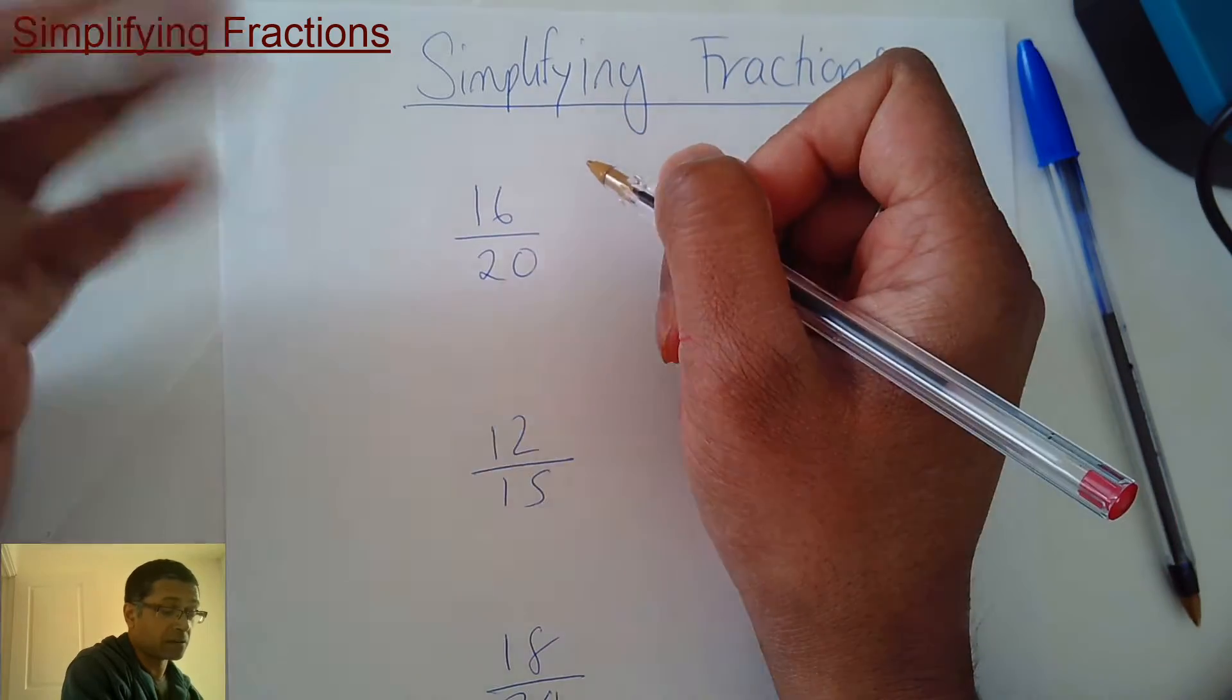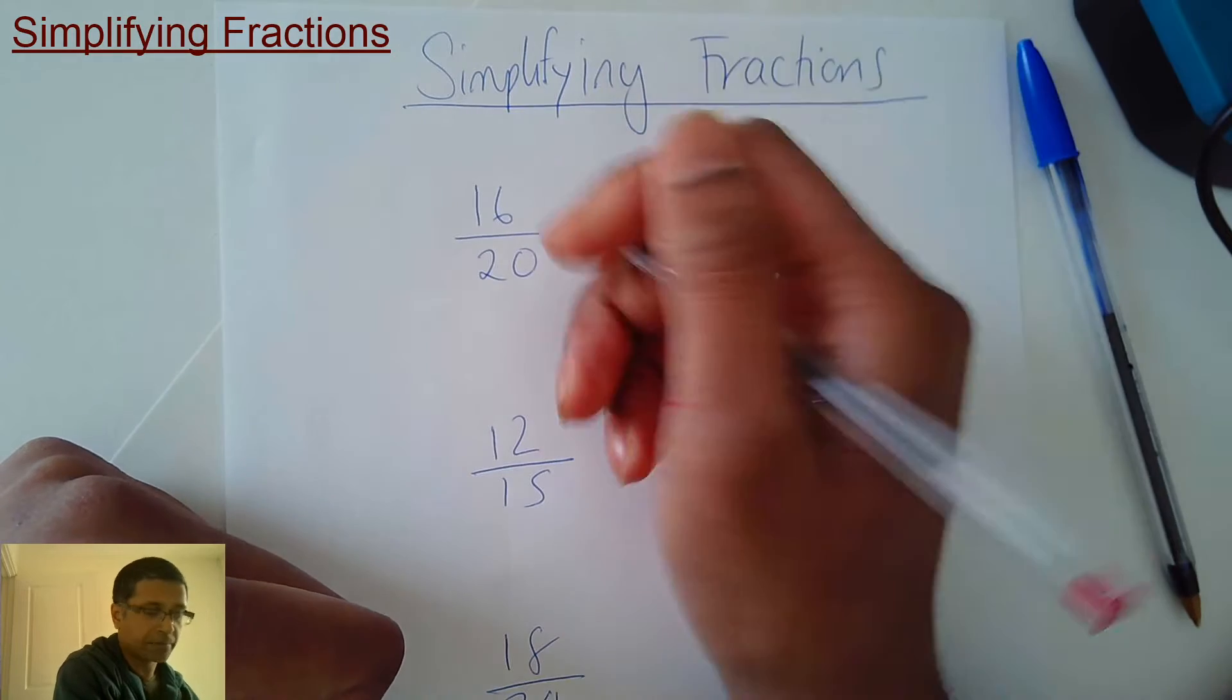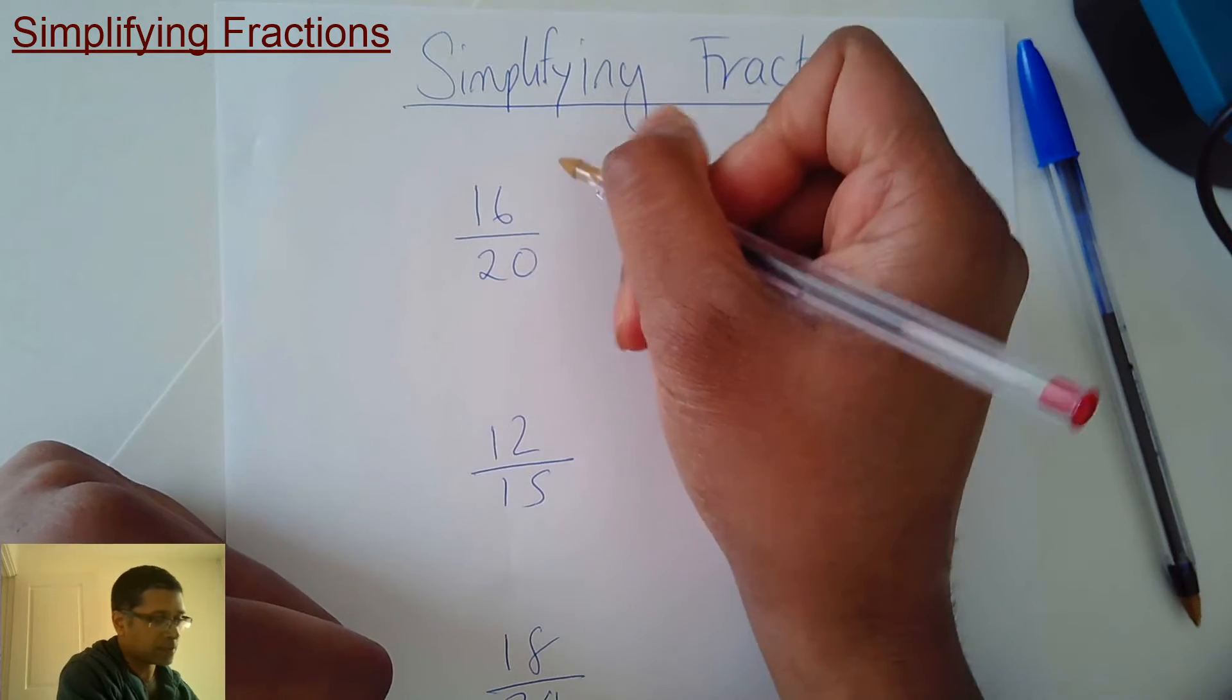Some of you are going to say 2 times table - 16 is in the 2 times table, 20 is in the 2 times table. But can you think of anything bigger? Well, it's the 4 times table.